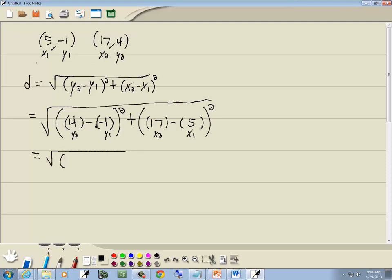Well, negative negative becomes a positive, so this becomes 4 plus 1 squared plus 17 minus 5. So, 5 is 12, so we've got 12 squared. 4 plus 1 is 5, so we've got 5 squared plus 12 squared.